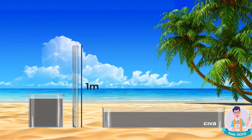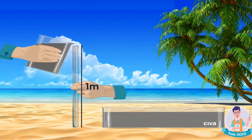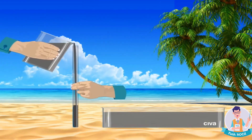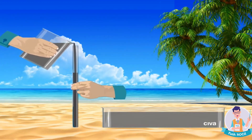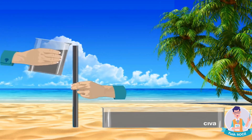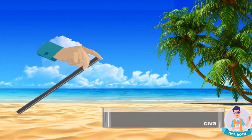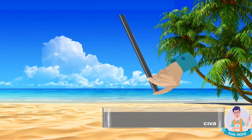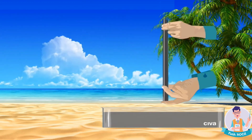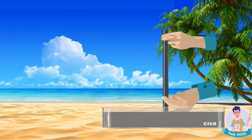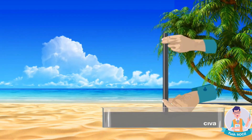Let's completely fill the glass tube, which is about 1 meter long, with mercury. After sealing the open end of the glass tube, let's turn it upside down and submerge it in the container filled with mercury.